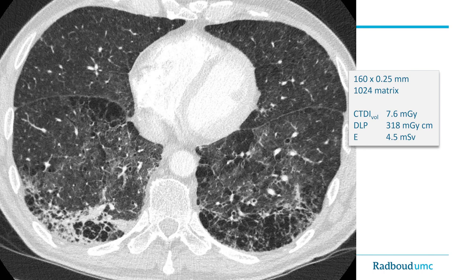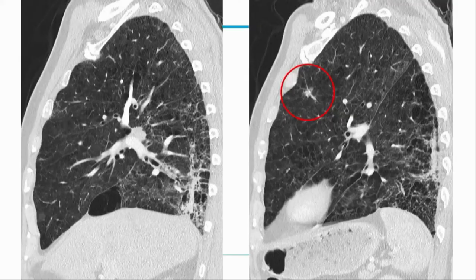Here's an example with a hybrid iterative reconstruction of a chest CT with an ultra-high-resolution CT scanner at a reasonable radiation dose. You can see exquisite detail on this high-resolution CT. In this example you see fibrosis, emphysema, and a small cancer.